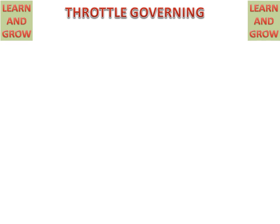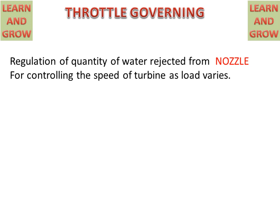Today we will discuss Throttle Governing and how it works for maintaining the flow of water. We know that regulation of the quantity of water rejected from the nozzle in the case of an impulse turbine, for controlling the speed of the turbine as load changes, is called governing.